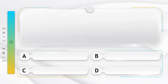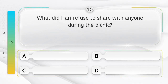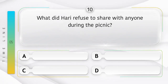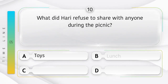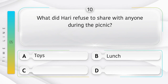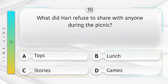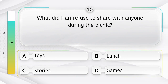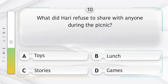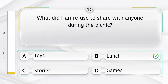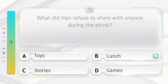Pinch. What did Hari refuse to share with anyone during the picnic? Pikani ke doraan Hari ne kisih ke saath kya saajha karne se mana kar diya? Option is A. Toys. B. Lunch. C. Stories. D. Games. Answer is option B.